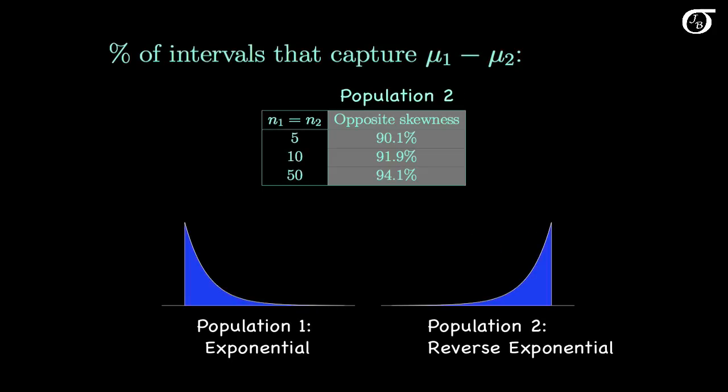Let's look at one last situation: skewness in opposite directions in the two populations. Population 1 has an exponential distribution and population 2 has the same distribution but flipped over with left skewness. This is not a distribution we'd expect to see often, but it illustrates that if skewness is in opposite directions the procedures can perform poorly. This is the worst percentage seen in all of the simulations. As sample sizes increase it's less of a problem, and the good news is this situation is very unlikely to arise in practice.